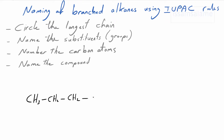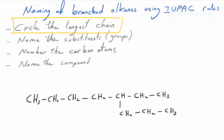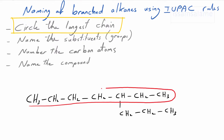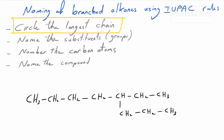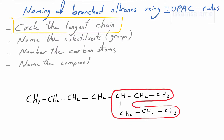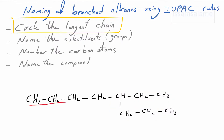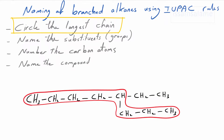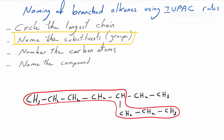Let's apply these rules on the following example. Please make sure to apply the first rule properly, because if you make a mistake in the first step everything after will be wrong. The longest chain is the maximum number of carbon atoms that I can join in sequence. If I do it one way we get seven carbon atoms; another way gives six; but this way we get eight carbon atoms in sequence — so this is the longest chain.